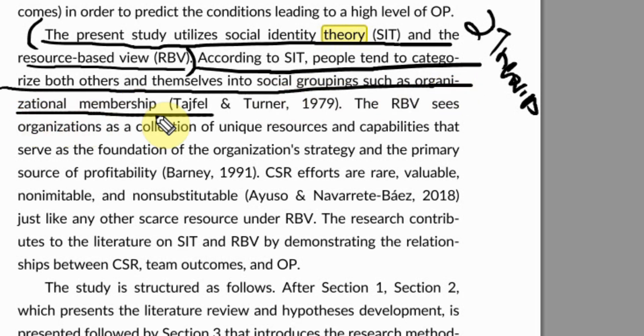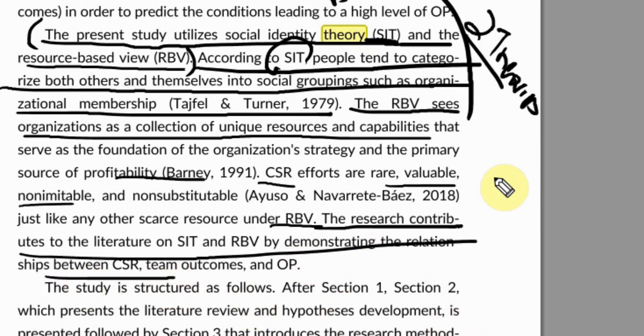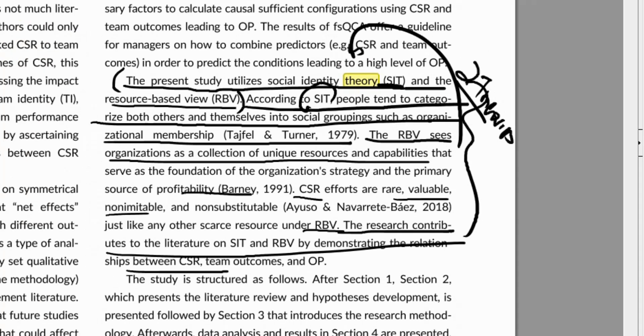Just a sentence or two is enough. This is social identity theory and this is resource-based view. Now, once you've done that, now CSR efforts and how are they linked to your RBV? So, you may link briefly the variables with the theories. If you've got multiple theories or theories, this is a good idea. And then your contribution. Obviously, you can mention the contribution in greater detail in the contribution section of the introduction as well. So, once you've done that, the first step, complete. Incorporate the theory in the introduction.